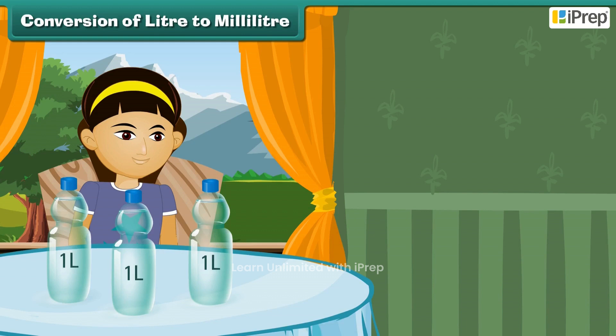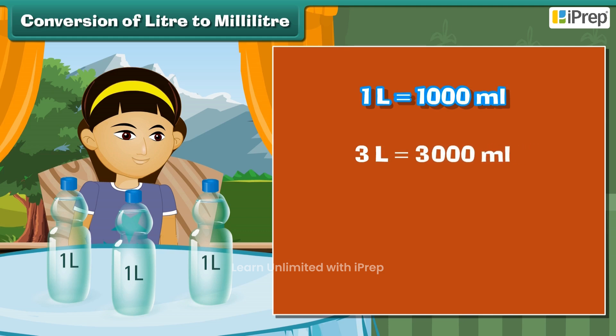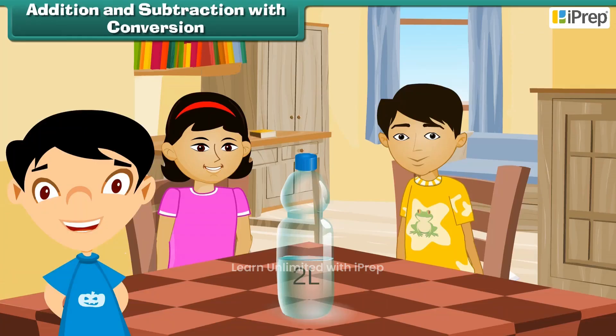Conversion of liter to milliliter: Sonam drinks 3 liters of water in a day. What is Sonam's water intake in milliliters? 1 liter is equal to 1,000 milliliters. So 3 liters is equal to 3 into 1,000 milliliters, which equals 3,000 milliliters. Therefore, Sonam drinks 3,000 milliliters of water in a day.